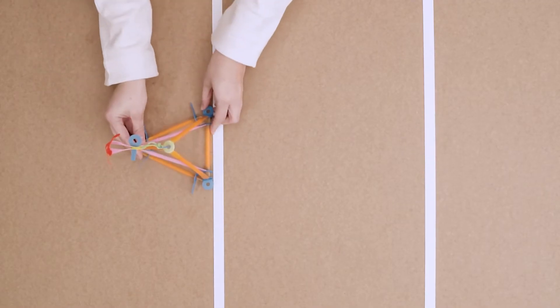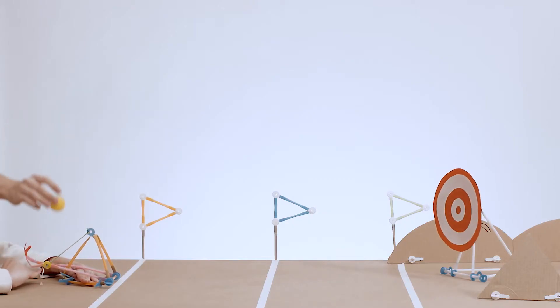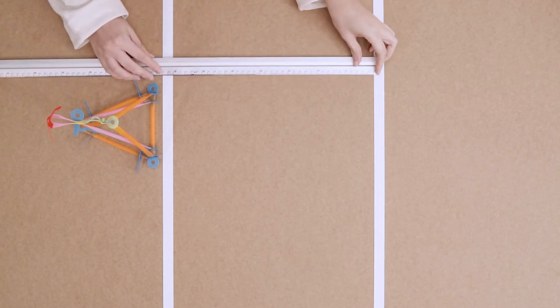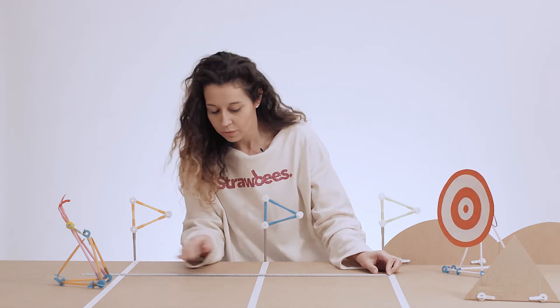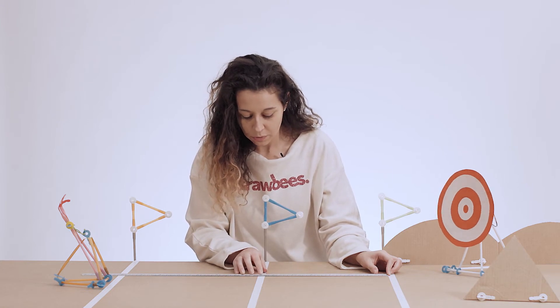In this lesson, spring into the challenge of constructing catapults and trebuchets to launch projectiles. Create a range by laying down masking tape as markers and measure equal distances between them using the recommended measurements written below. Build the frames